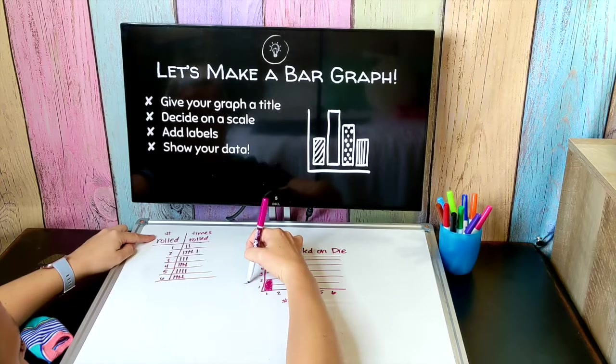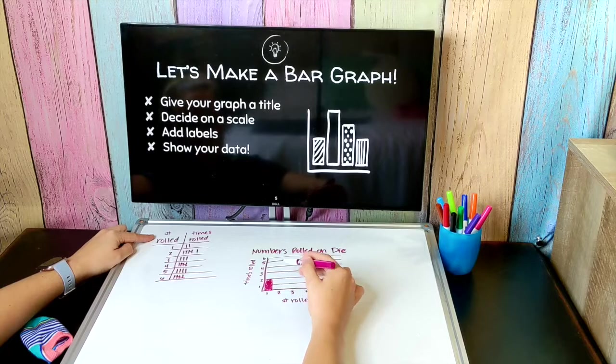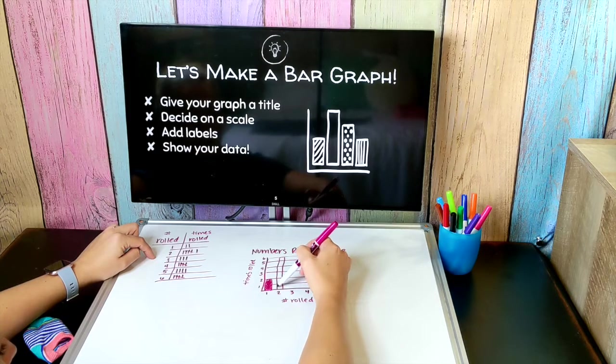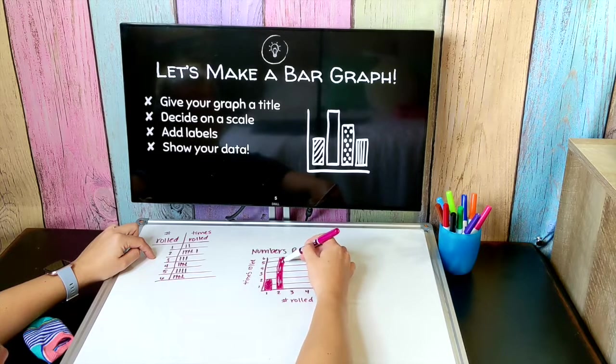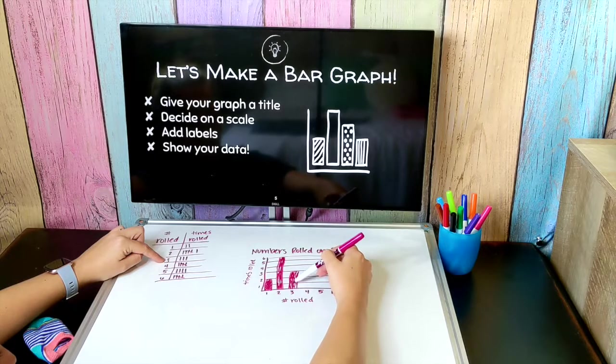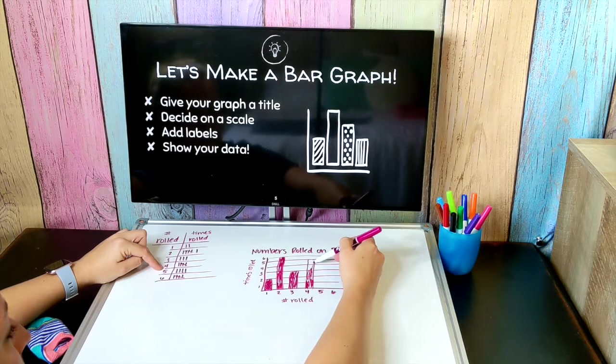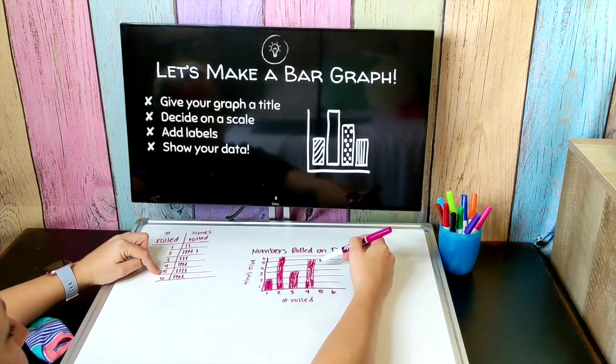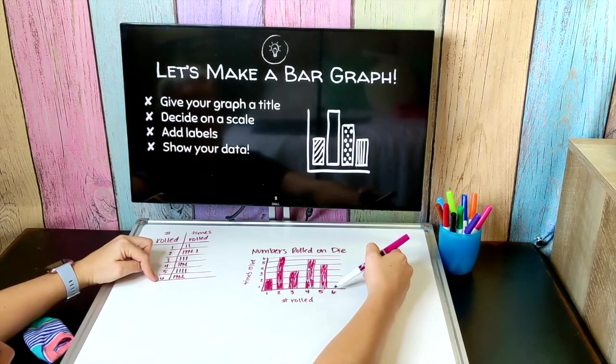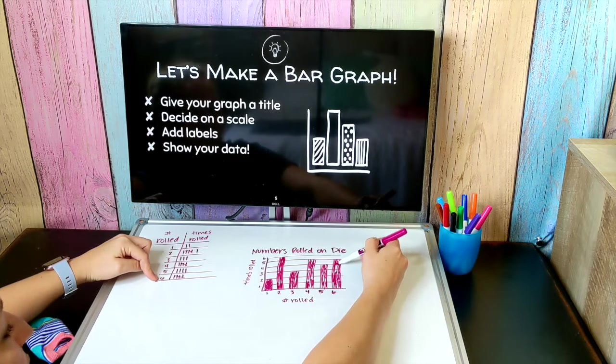So one I rolled two times. The number two I rolled six times, so that's going to be a nice tall graph all the way up to six. The number three I rolled three times. The number four I rolled five times. The number five I rolled four times. And the number six I rolled five times.